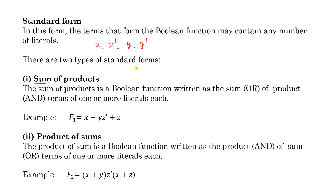The first type is Sum of Products. Sum means x plus y, and product means x dot y or simply xy. In Sum of Products form, we find product terms — each product term may contain one or more literals — and write the sum of all these products. For example, a function with three product terms where one has one literal, another has two, is in Sum of Products form.